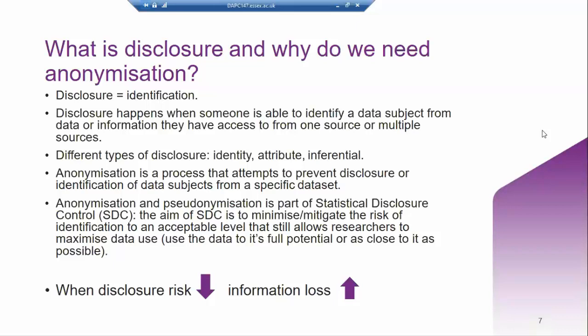When talking about anonymization, disclosure simply means identification — when someone is able to identify a data subject from data or information they have access to, be it from one or multiple sources. There are a few types of disclosure, the difference being in the type of information we learn about that unit of observation. Notice I say unit of observation — it might be a person, a company, a household, a shop on the high street, et cetera.